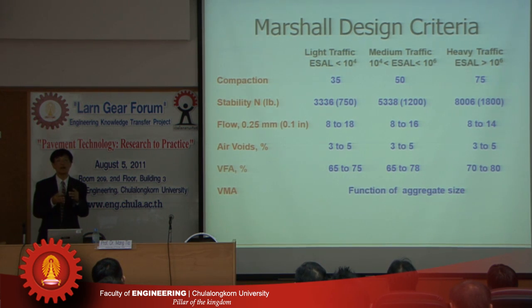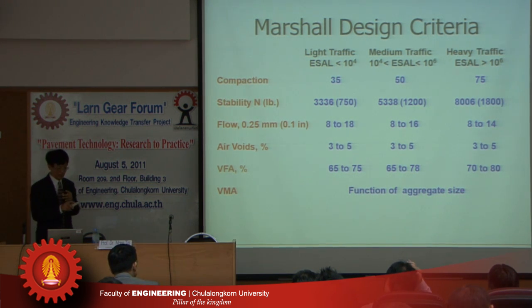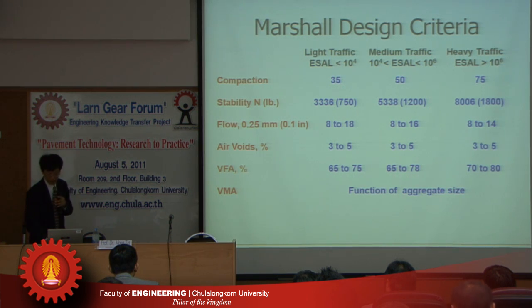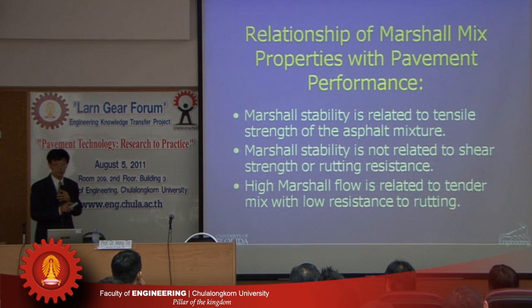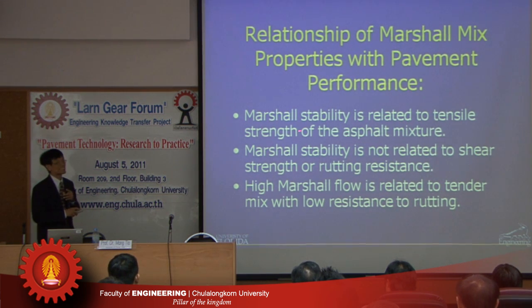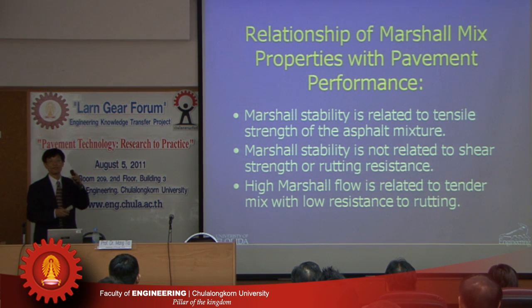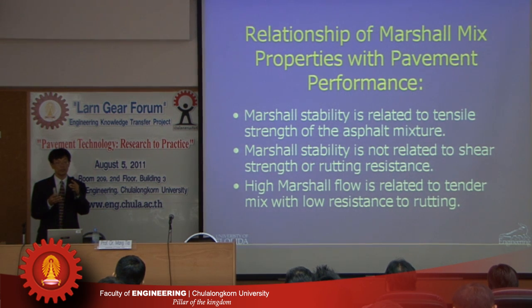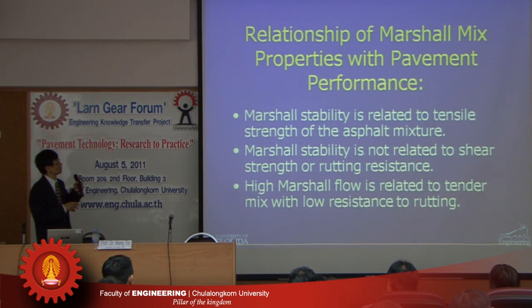If you do a Marshall Mix Design and pick the optimum asphalt content, is it going to work? We have the volumetric properties and also the stability and the flow. What does it mean? How is this related to performance? Marshall Stability is related to the tensile strength of the asphalt mixture. If you have a higher Marshall Stability, it means the tensile strength is higher. So the mixture is more resistant to bottom-up cracking and nothing else, because everything else is not related to Marshall Stability.